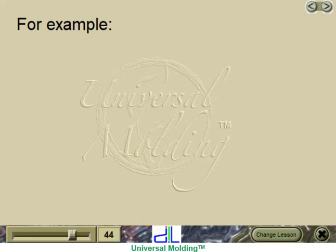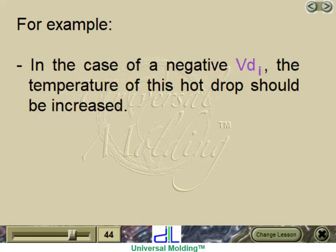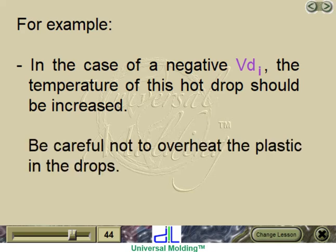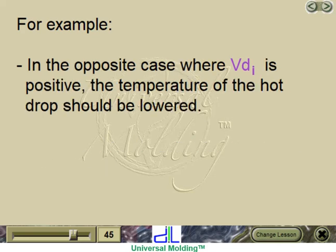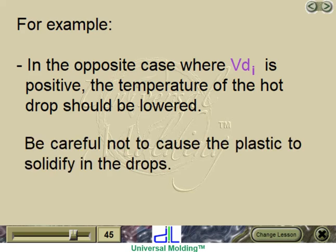In the case of hot runners, the flow by zone can be corrected by changing the temperature of the hot drops of the runner system. For example, in the case of a negative deviation of volume, the temperature of the hot drop should be increased. Be careful not to overheat the plastic in the drops. In the opposite case where deviation is positive, the temperature of the hot drop should be lowered.